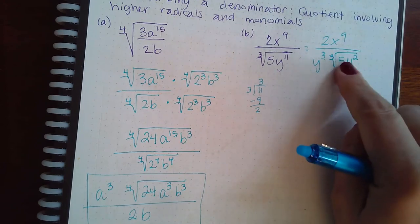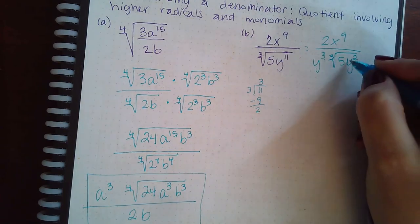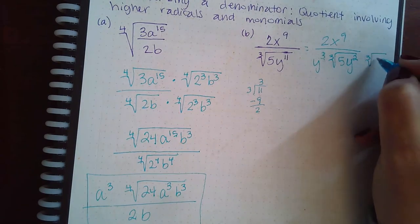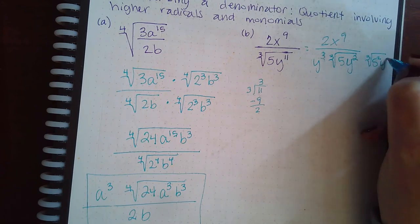Now I can figure out how many more I need so that I get a cube, okay? So if I only have one 5, that means I'm going to need two more 5's. But I already have 2 y's, which means I only need one more y.